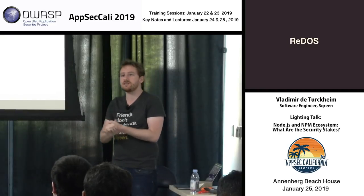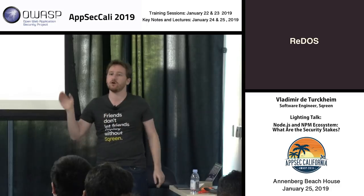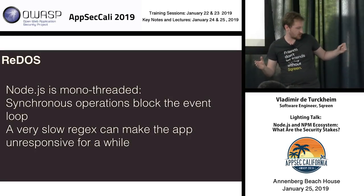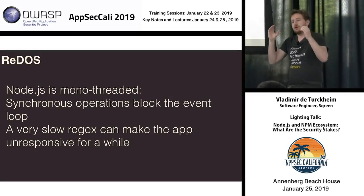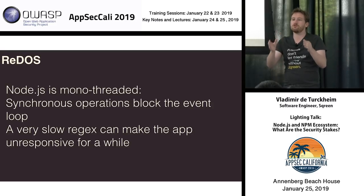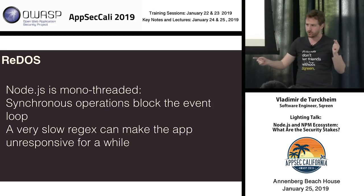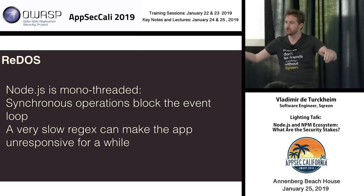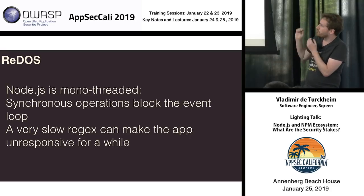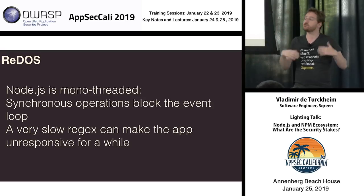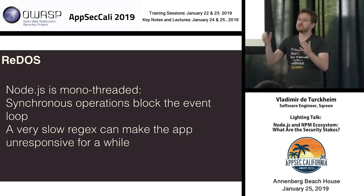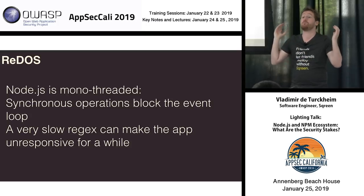Now let's go to something even more JavaScripty: ReDoS. Node.js is monothreaded — you can do only one thing at a time. If you have a very, very slow synchronous chunk of code, Node.js will never go back to other asynchronous operations. It will just run that synchronous piece of code until it ends. So if you can find a regex that is extremely slow, you can craft a payload to send to an endpoint, and the endpoint will take forever to run. Since we are in the JavaScript main thread, it will block the whole process.